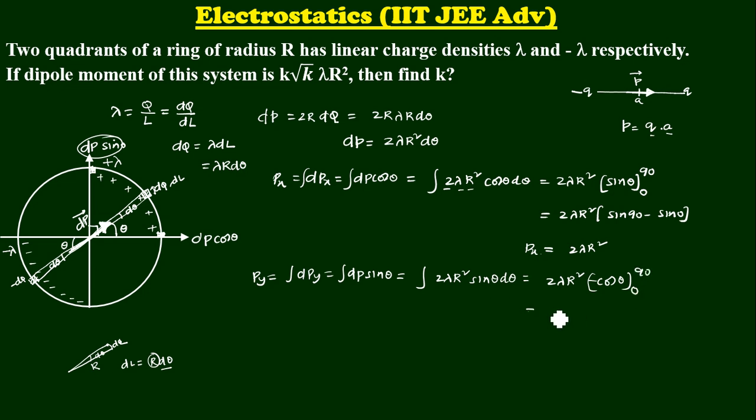Now, 2 lambda R square. Whenever you have got minus, substitute lower limit first and forget that minus. Cos 0 minus cos 90. So, 2 lambda R square cos 0, 1. Cos 90, 0. It is again 2 lambda R square.